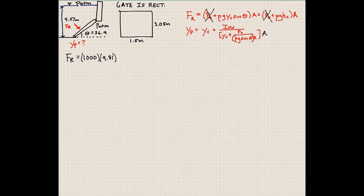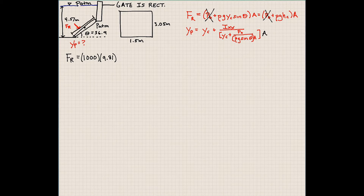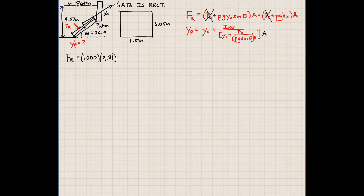Let's think about where Y sub C is going to be. If we extend the water and look at a diagram in our text, Y sub C is going to be from the location of the centroid of the submerged gate, which would be somewhere in the middle. Remember this gate is rectangular — the gate is 3.05 meters long, and it has a depth into the page of 1.5 meters.